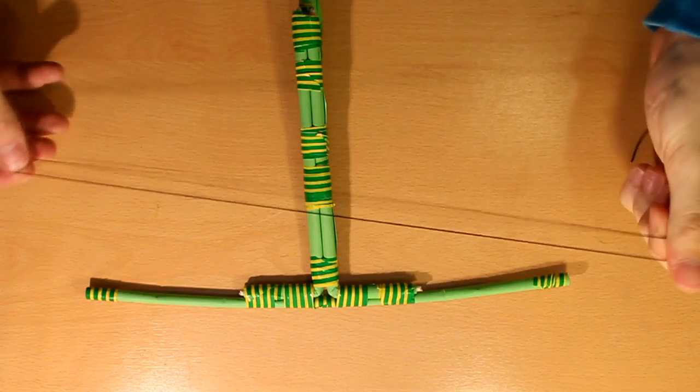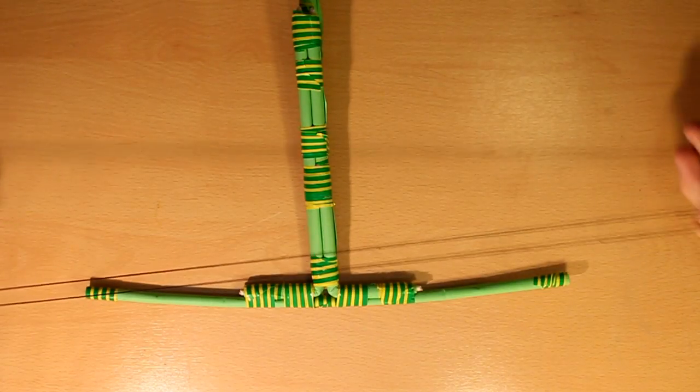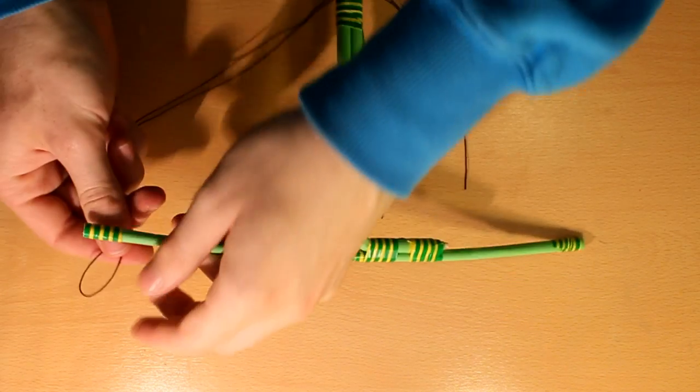After doing so, grab some string. Make a simple knot in the way that you'll have two parallel lines as you'll see.